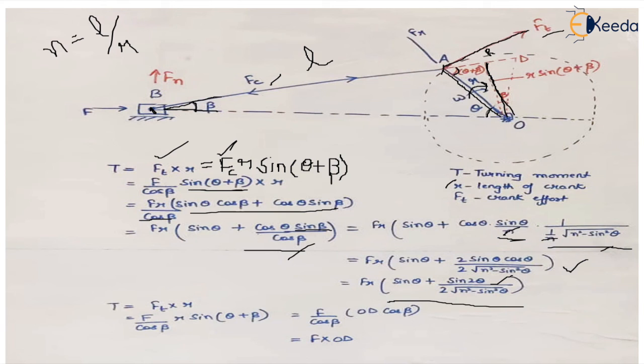We can also denote this turning moment as Ft × R. If we want to denote it in terms of piston force, it will be F times the perpendicular distance OD. Whichever way you want, we can solve it by doing numericals.